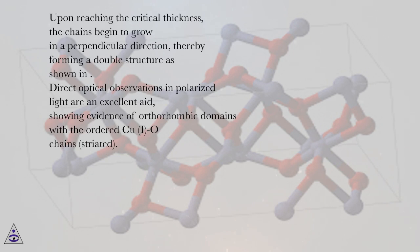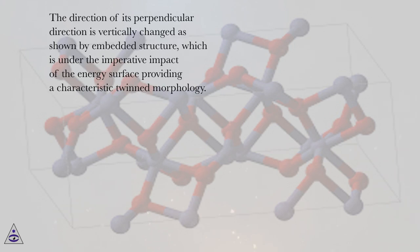Striated. The direction of its perpendicular direction is vertically changed as shown by embedded structure, which is under the imperative impact of the energy surface providing a characteristic twinned morphology.